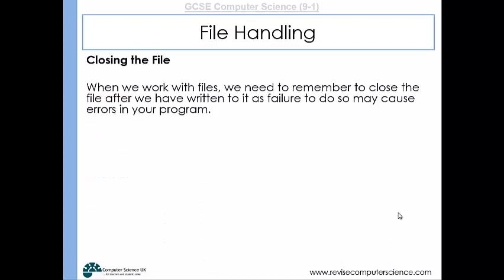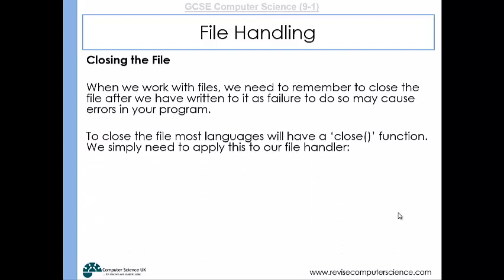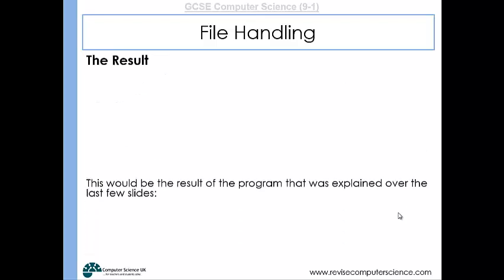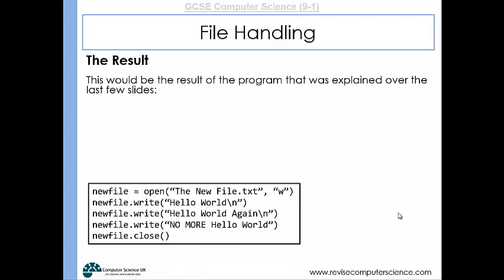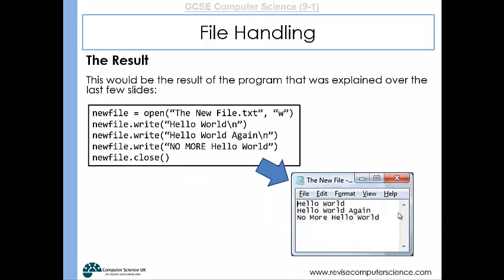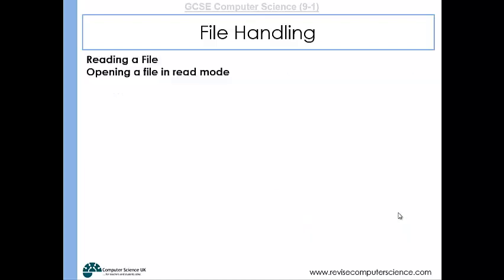Once we have written our files, we have to remember to close it, otherwise we might get some errors. To close the file at the end of our script that we've been writing, we just write the close function and we apply that to our file handler. Newfile dot close will close the file. The result of the program, if we were to run that code, would result in a text file being created with three lines of text within it.